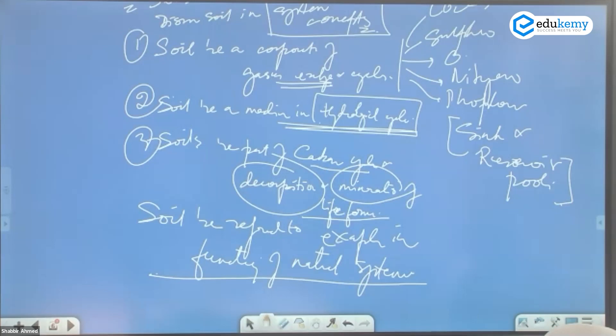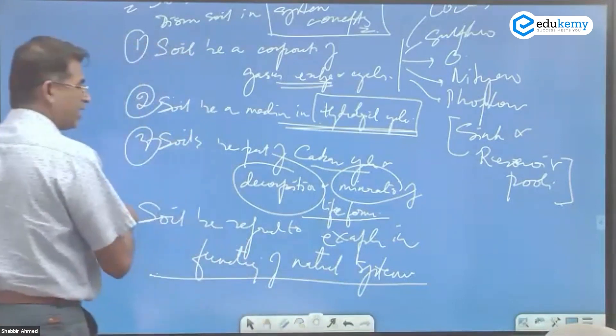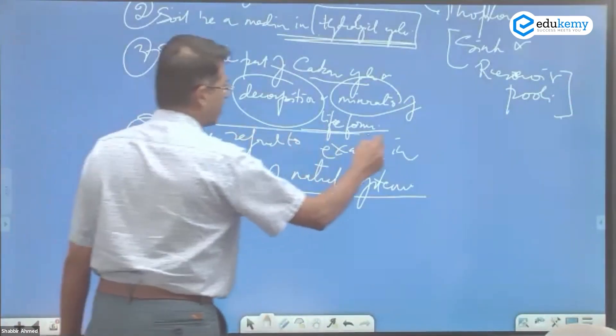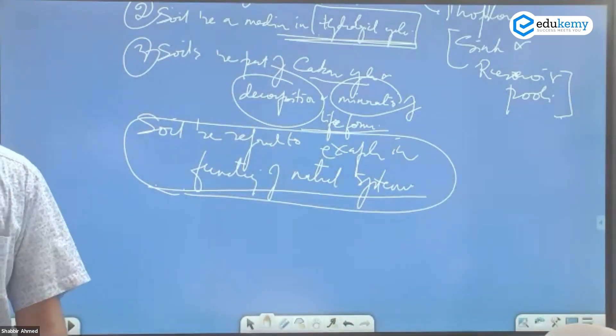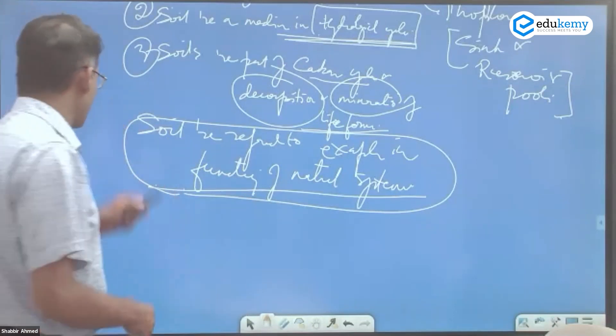Soils are natural systems. That's why if you destroy soils you cannot get back soils, because the system operation gets impacted. Soils are referred to as examples in the functioning of natural systems. So we talk about soil formation. In fact, you can add one more point.